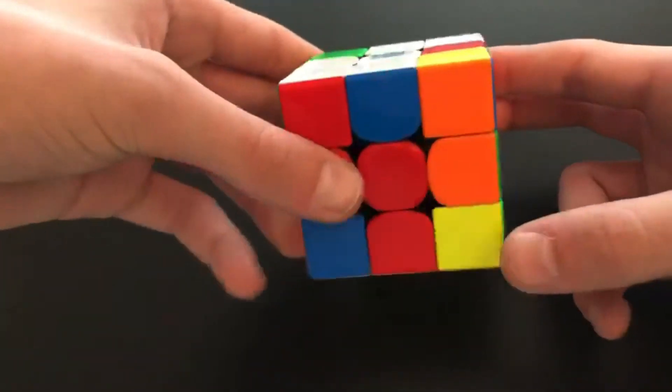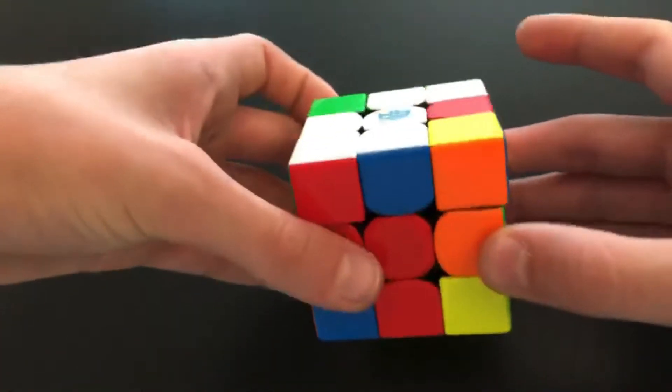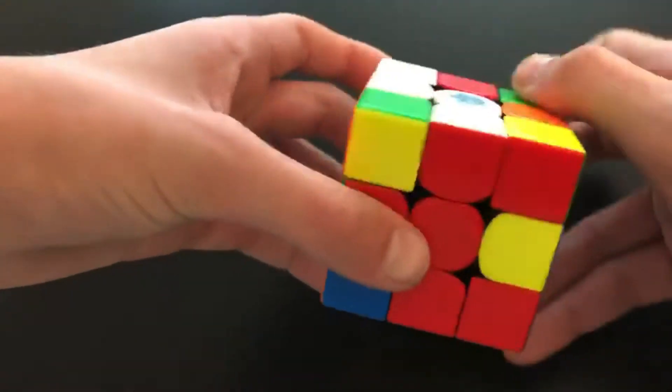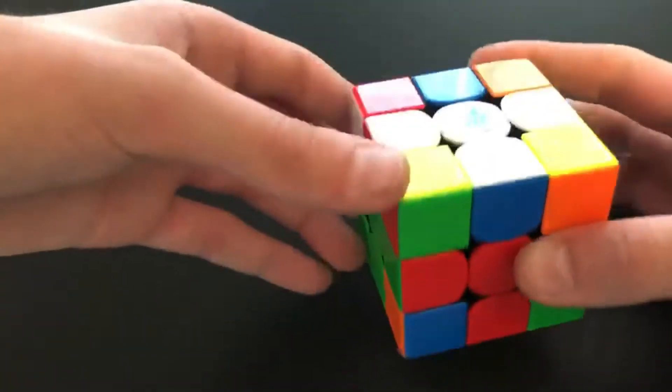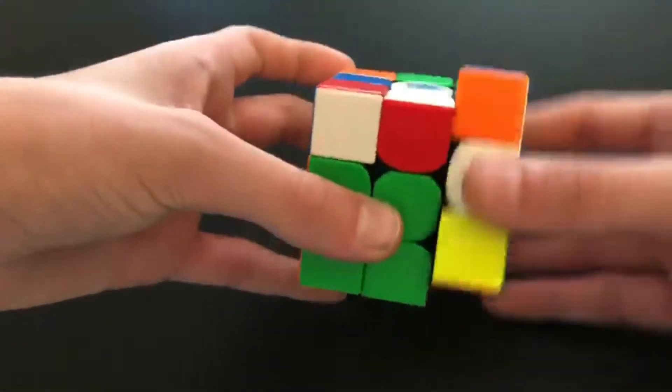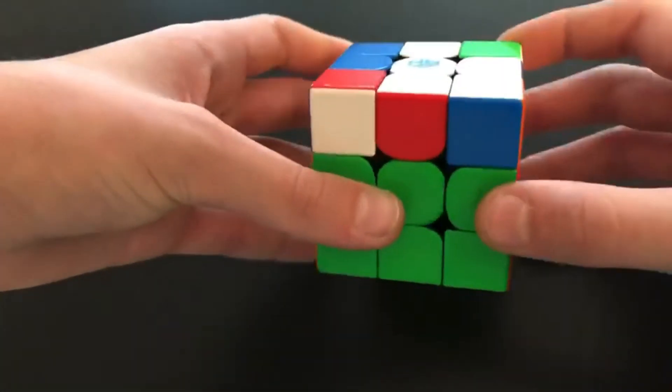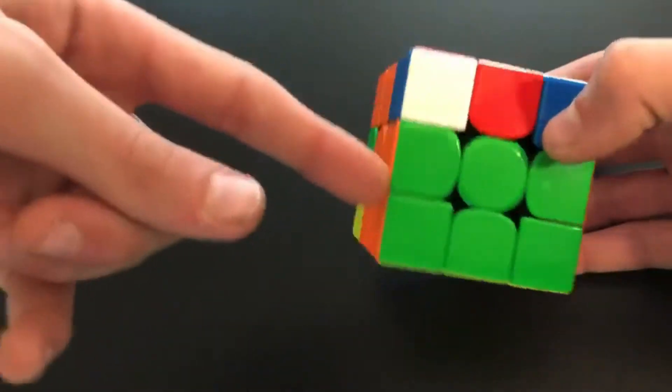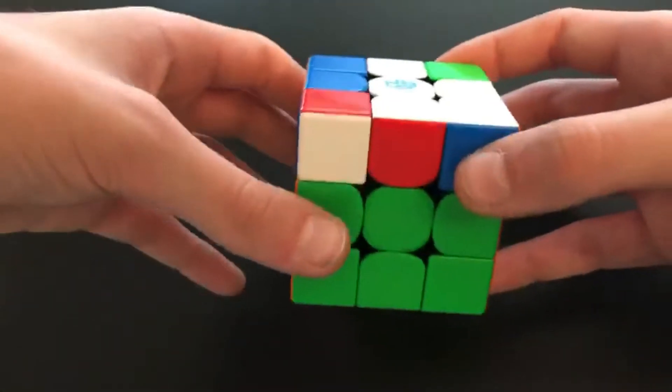Then I rotate and find the edge, so I do these two. And then I see these two, so I do these. And this is pretty unfortunate because I have two solved pairs in the front, so I have to do a Y2.